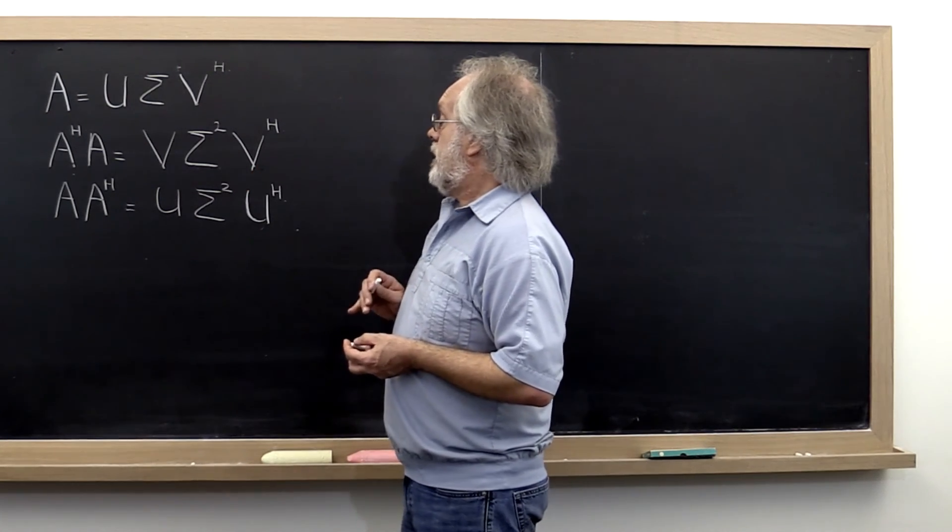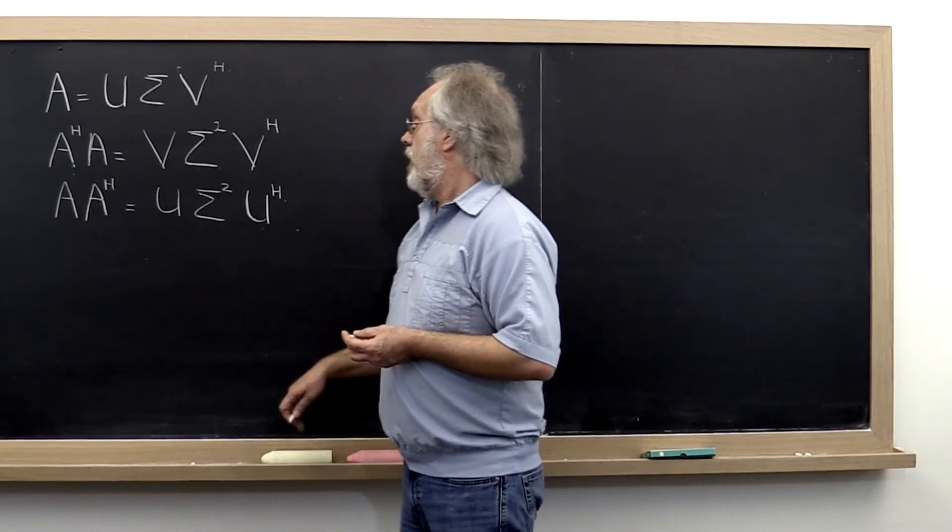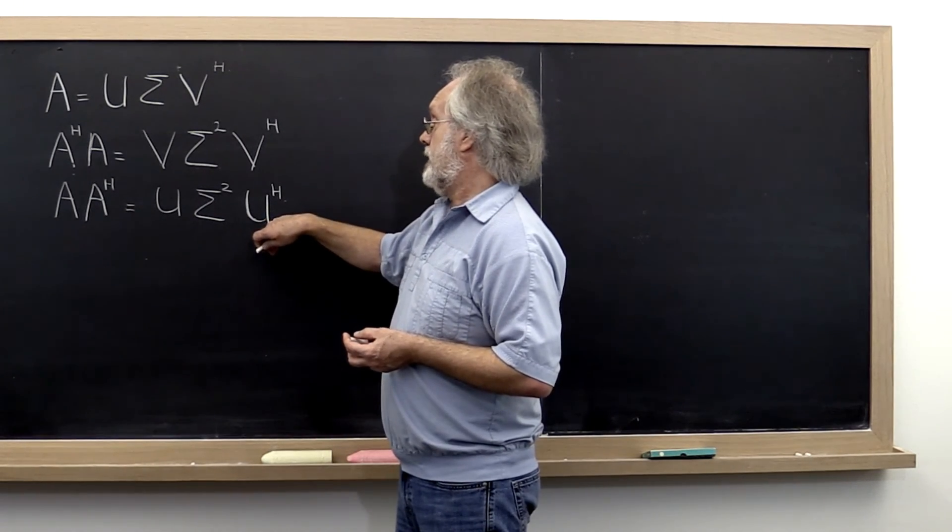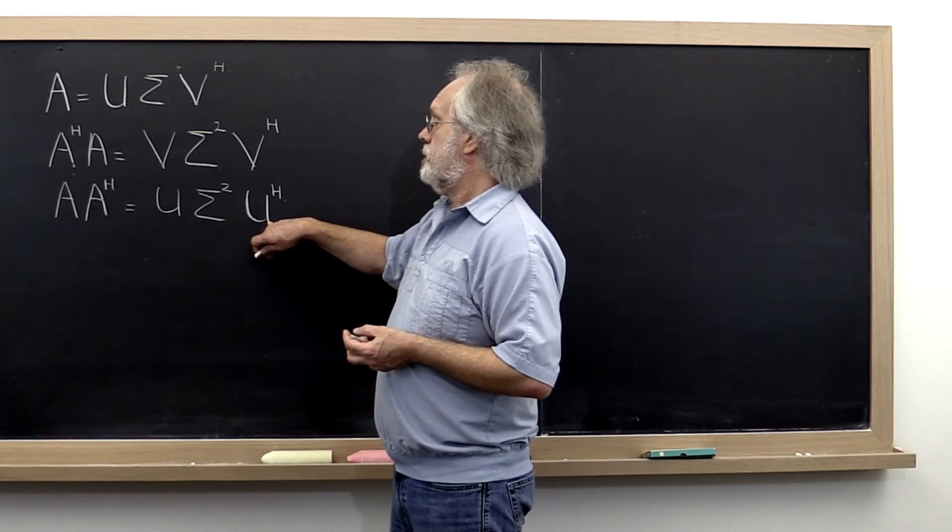And if instead you form A*A^H, then its spectral decomposition is given by U Sigma^2 U^H.